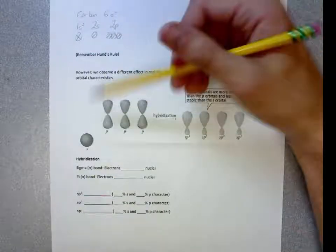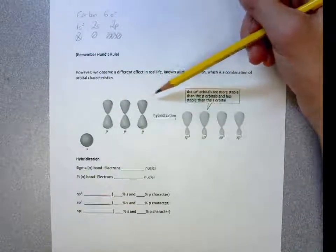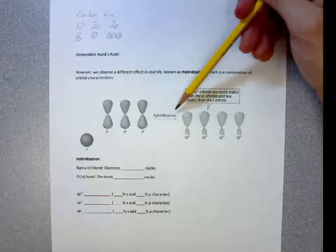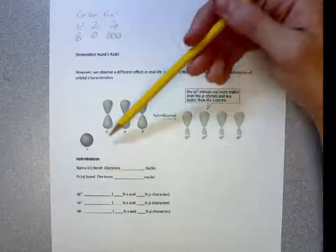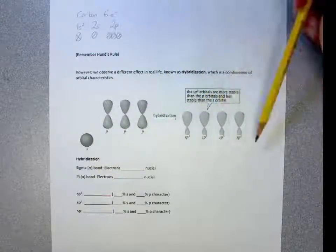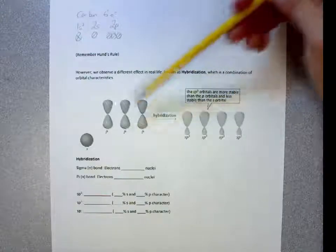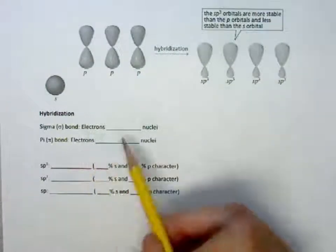However, when we form bonds with carbon, such as H's, and we make methane, we get something known as hybridization, which is actually a combination of the S and P character. We actually get entirely different orbitals with entirely different shapes and energy.